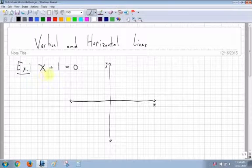When you have an equation like x plus 1 equals 0, the first thing you want to do is get it in x equals form. If I subtract one from both sides, I get x is equal to negative 1.